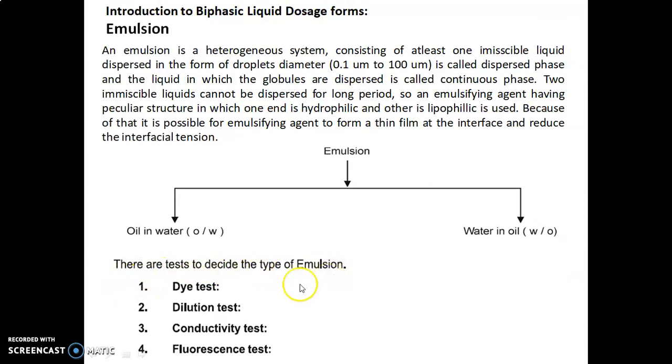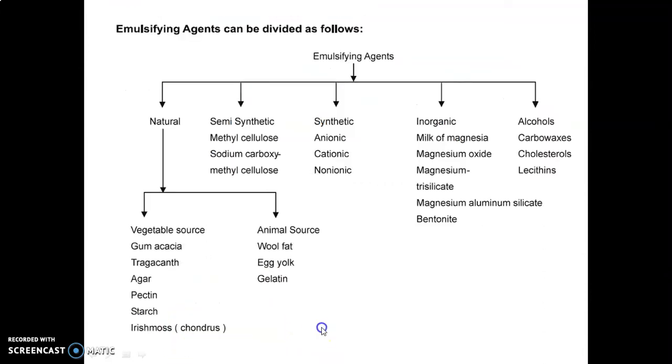There are four tests to determine the type of emulsion: the dye test, dilution test, conductivity test, and fluorescence test.